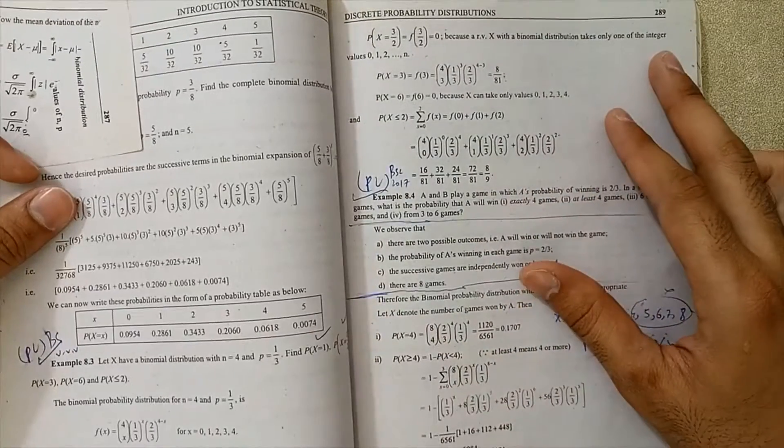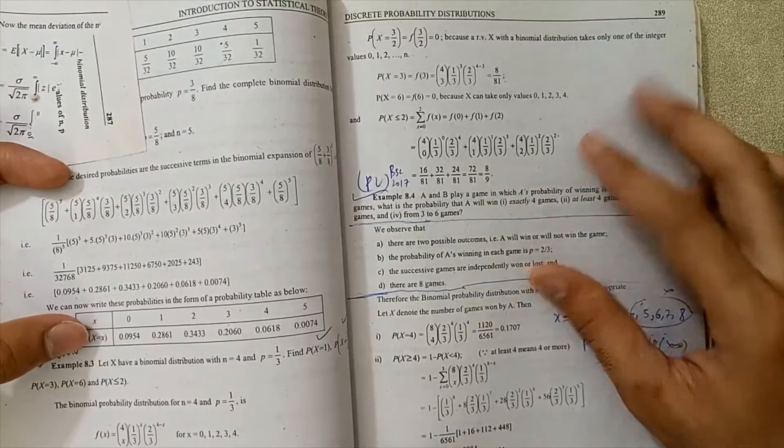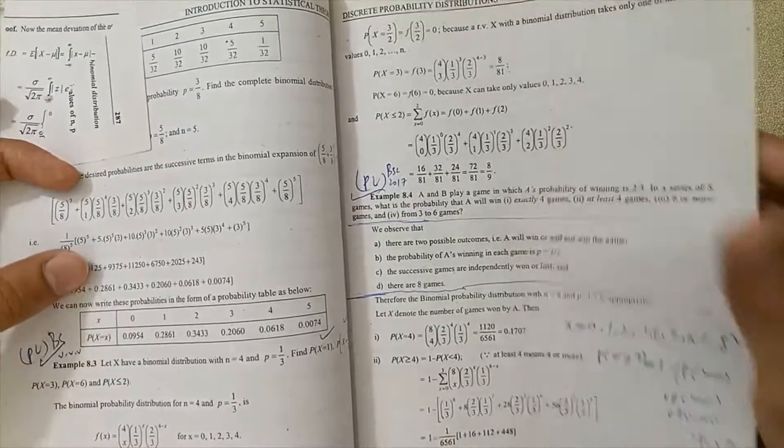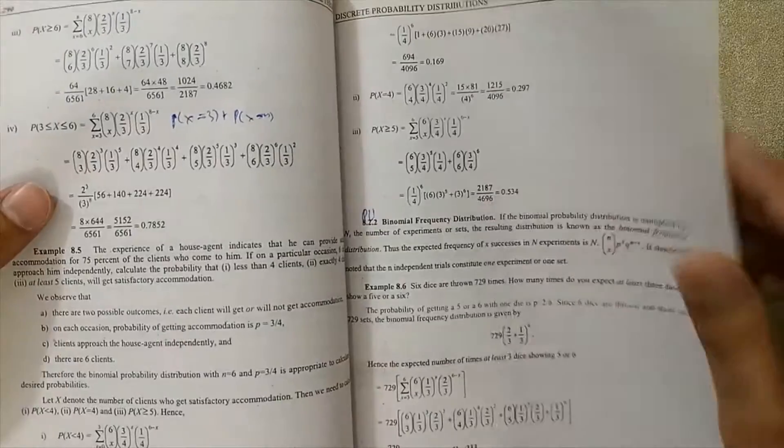At page number 289, example number 8.3 and 8.4 are very important for exams or 2022 BSC statistics.